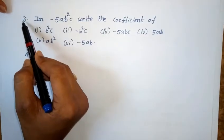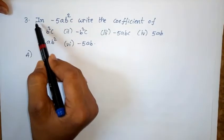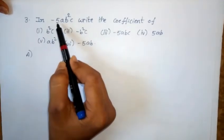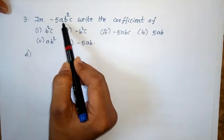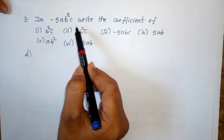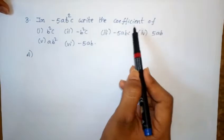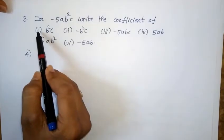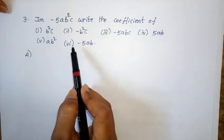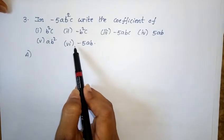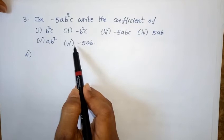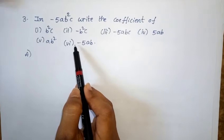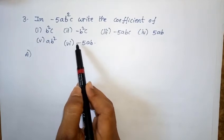Third problem: In minus 5ab²c, write the coefficients of the following. Six terms are given, and for all six terms we need to find the coefficients.